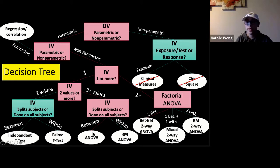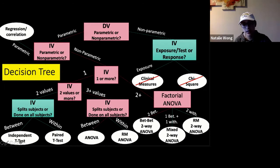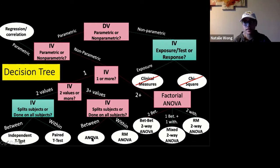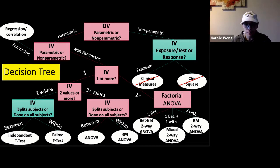For this week, we're just working with between subject factors, so that's where we get our one-way and two-way independent ANOVAs. The one-way ANOVA is referred to as a one-way ANOVA in SPSS; I like you to specify it's an independent ANOVA versus a repeated measure. Then we'll have our two-way independent ANOVA on the factorial ANOVA side.